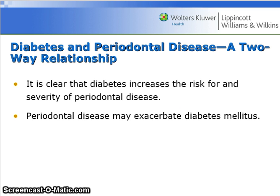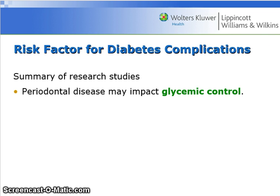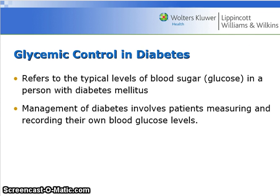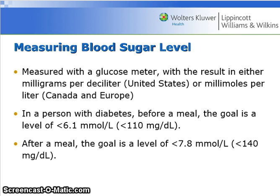Diabetes and periodontal disease have a two-way relationship. It is clear that diabetes increases the risk for and severity of periodontal disease, and periodontal disease may exacerbate diabetes mellitus. Research studies show that periodontal disease may impact glycemic control. Glycemic control refers to the typical levels of blood sugar or glucose in a person with diabetes mellitus, and management involves patients measuring and recording their own blood glucose levels.